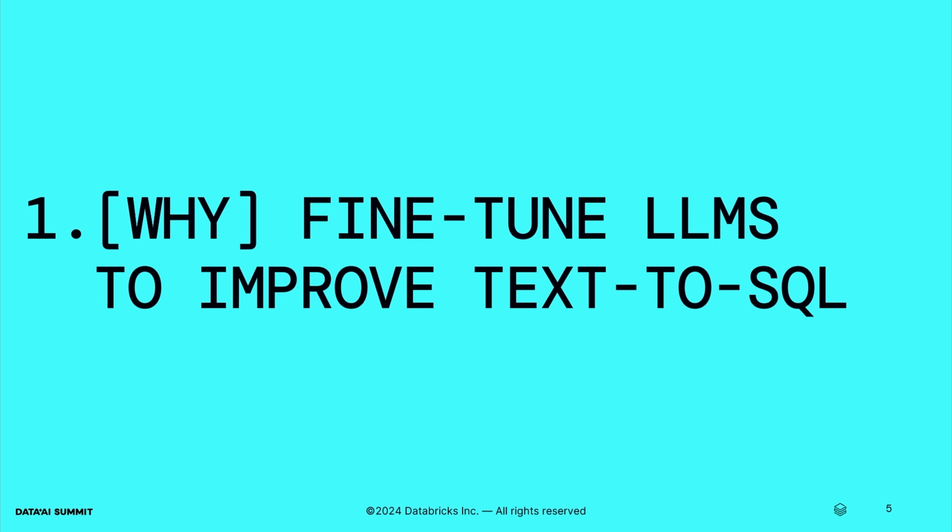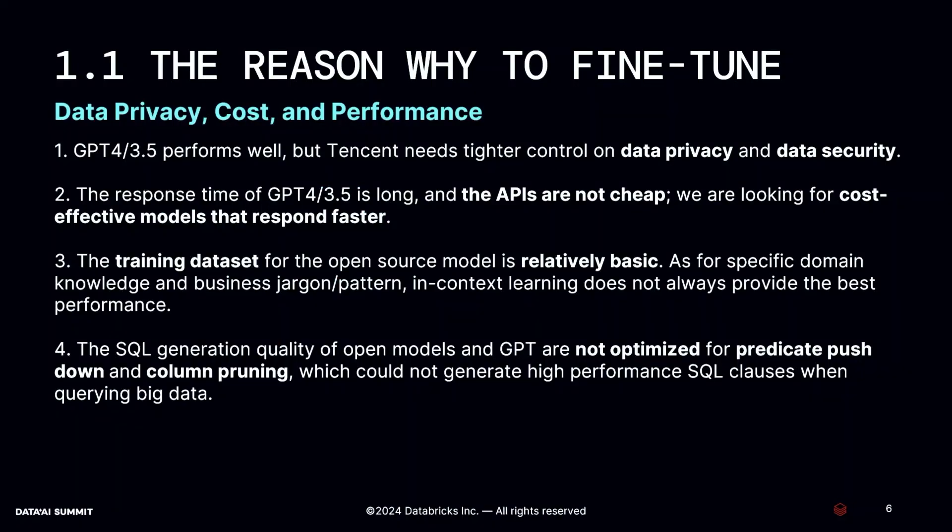Why fine-tune LLMs to improve text-to-SQL? As Kun just said, we have GPT and open LLMs — why fine-tune our own text-to-SQL models? Because of data privacy, cost, and performance. GPT cannot meet Tencent's data privacy and security requirements, the response time of GPT is long, and the API is not cheap. We need cost-effective models that respond faster. Also, the SQL generated by open LLMs and GPT is not optimized for predicate pushdown and column pruning, which could degrade performance when querying big data.